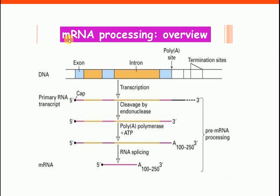Now let's discuss how messenger RNA processing occurs in eukaryotes. In prokaryotes, RNA is directly converted into protein, but in eukaryotes like mammals, the gene has 5' and 3' untranslated regions, as well as coding sequences called exons and non-coding sequences called introns. After transcription, we get a primary RNA transcript, also called pre-mRNA.